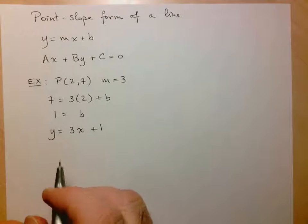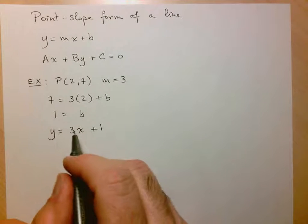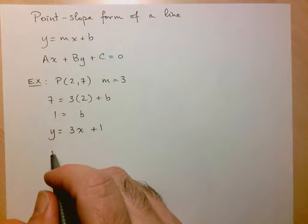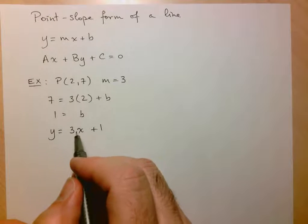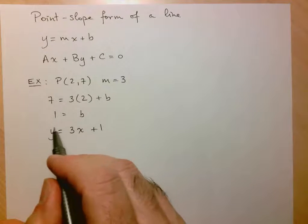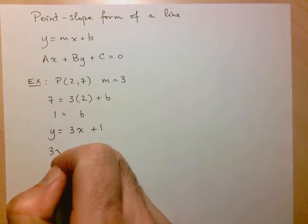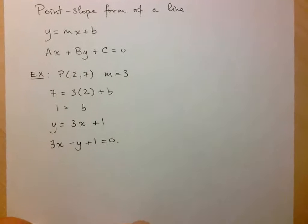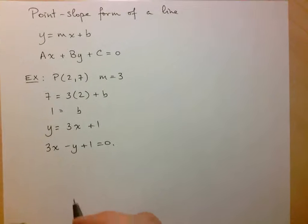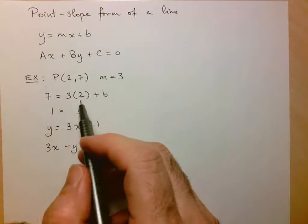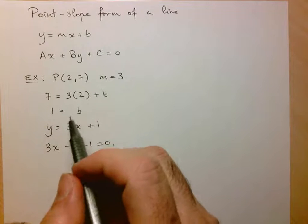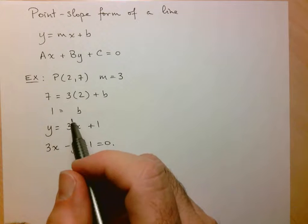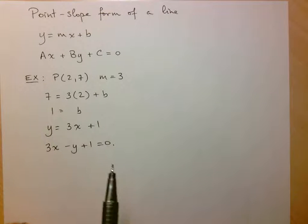And if you wanted to put it into standard form, well, you need all the coefficients to be integers, which they are already. So you just bring everything to one side of the equation. You usually like to have the coefficient of x be positive. So I'll bring the y to the other side. So 3x-y+1=0. And these are the two forms we've been using. Now this did require, while it was quite easy, it did require us having to solve a simple equation in order to find that b value.